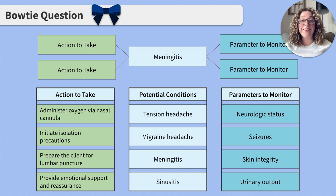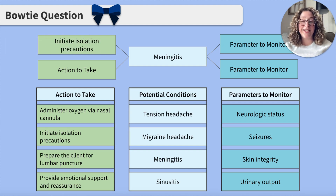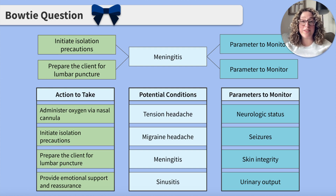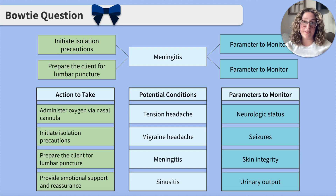Let's move on to actions to take. When thinking about the highest priority actions for this client, you're going to think of initiating isolation precautions and preparing the client for a lumbar puncture. Administering oxygen via nasal cannula is not applicable, as their oxygen saturation was 98% on room air. While providing emotional support and reassurance is a great intervention, it is not the priority at this time.